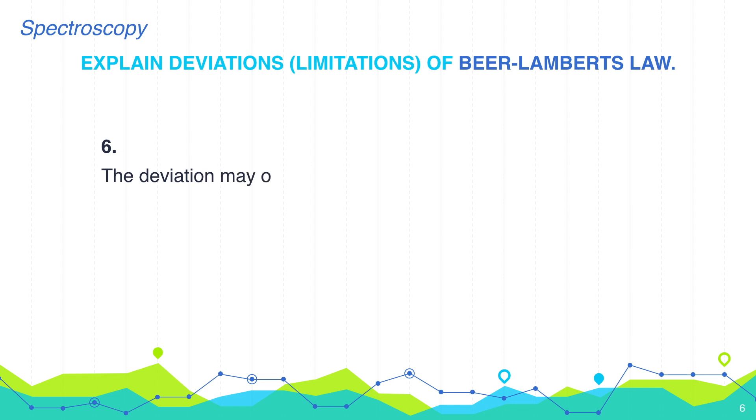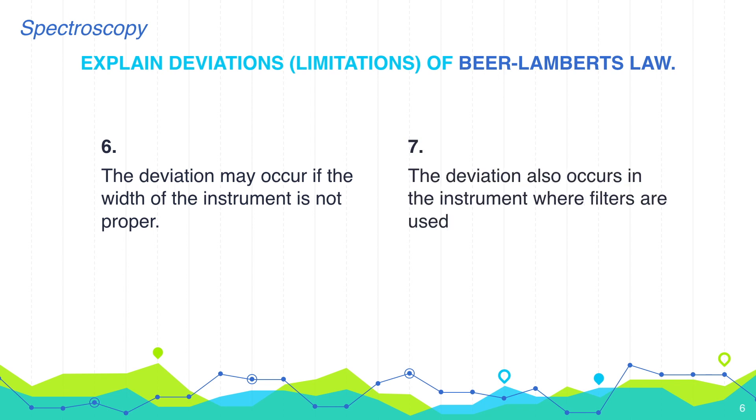Sixth, the deviation may occur if width of the instrument is not proper. Seventh, the deviation also occurs in the instrument where filters are used because with filters we cannot get monochromatic light.